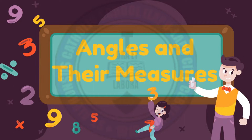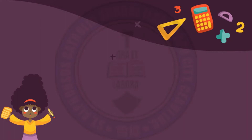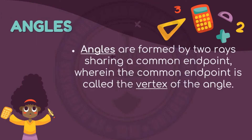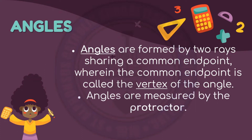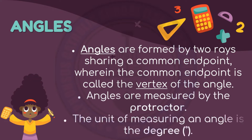Angles and their measures. Let's define first angles. Angles are formed by two rays sharing a common endpoint, wherein the common endpoint is called the vertex of the angle. Angles are measured by the protractor, and the unit of measuring an angle is the degree.